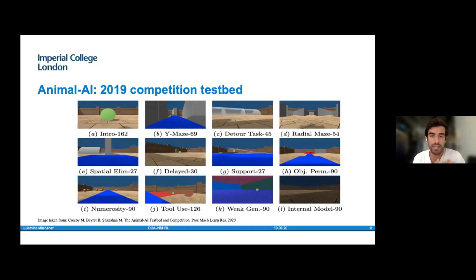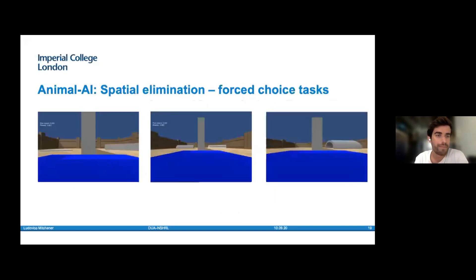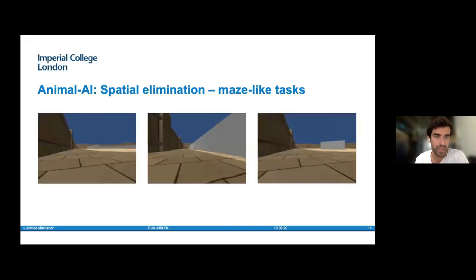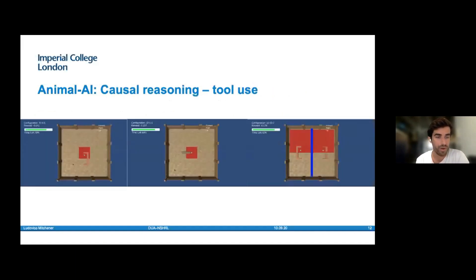Many of these tasks explicitly require a high-level understanding of the environment to act appropriately, and therefore also lend themselves particularly well to a neuro-symbolic approach. The spatial elimination category has forced-choice tasks where the agent is on a platform and needs to decide whether to go left or right to where the goal is most likely to be hidden, requiring notions of confusion, choice, and exploitation of spatial reasoning. Similarly, the maze-like tasks have a very tight deadline, so you need to explore the arena efficiently to reach the goal. And causal reasoning, one of the most challenging subcategories in the testbed, involves using a tool to pull or push the goal.